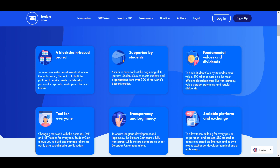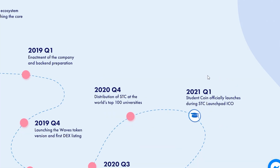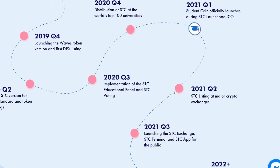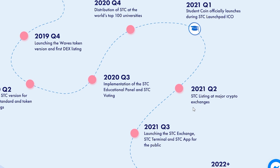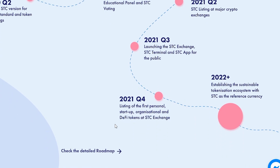Now let's look at the roadmap to see what is planned for the rest of 2021 and beyond. Currently the ICO is ongoing. After that is completed, the next big step forward will be listing STC on multiple major exchanges that have not been announced yet. In Q3, the actual platform will be launched with the STC Exchange going live along with the STC Terminal and STC public app. In Q4, the listing of the first personal, startup, organizational and DeFi tokens will start to take place on the STC Exchange.